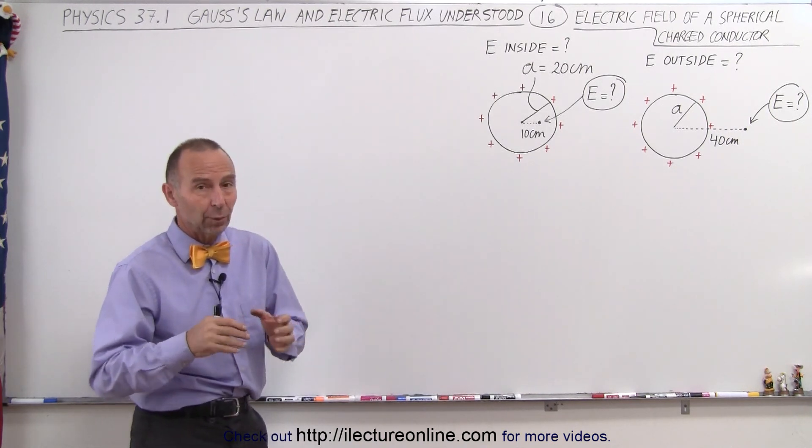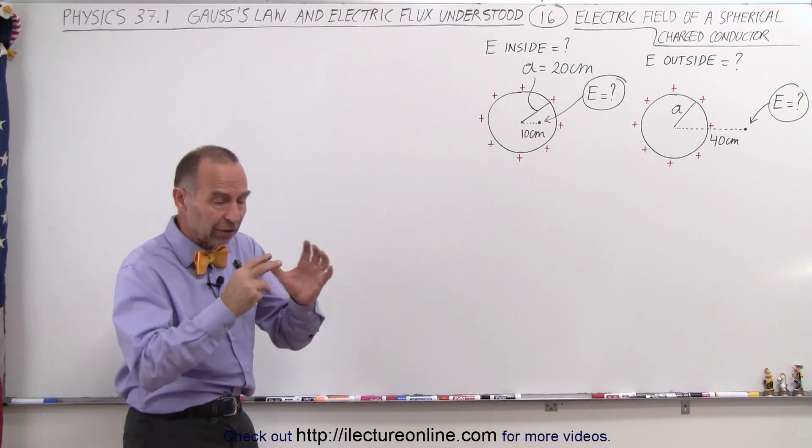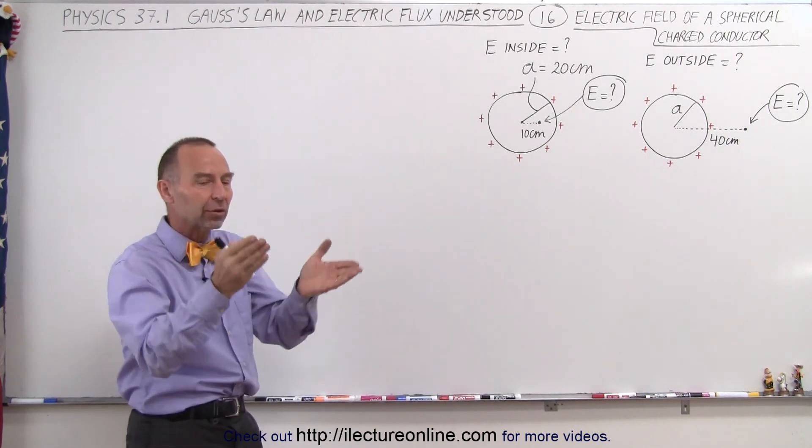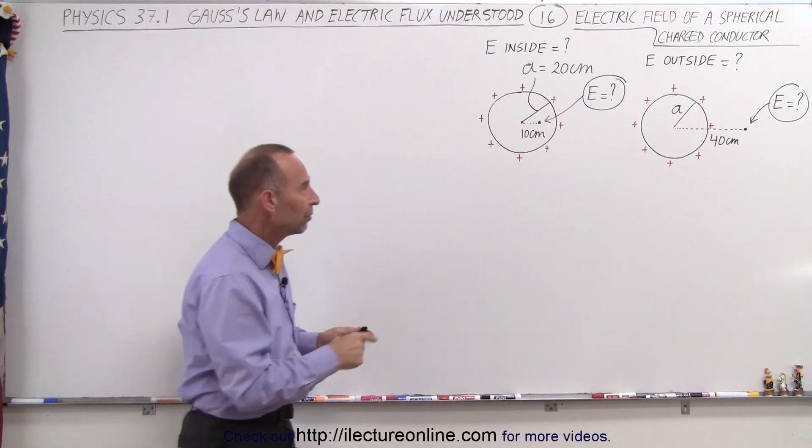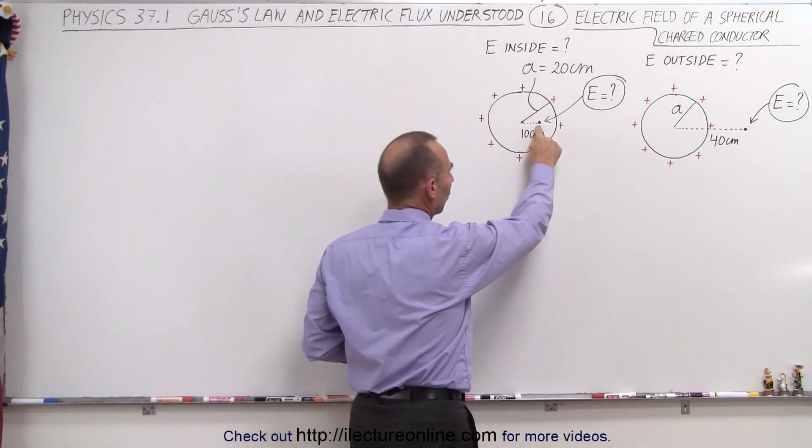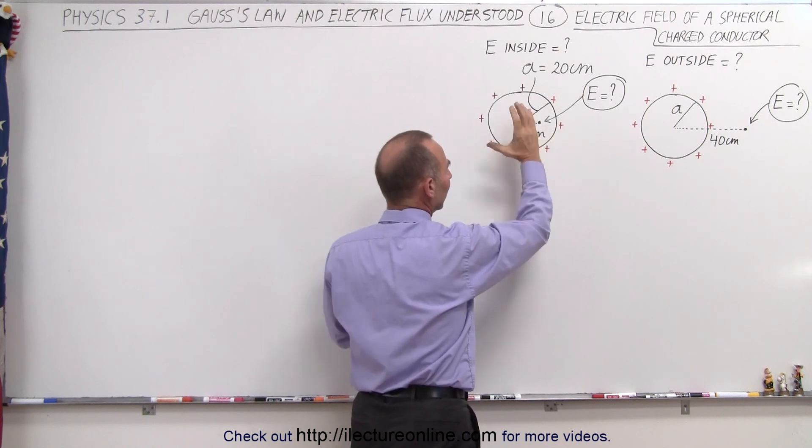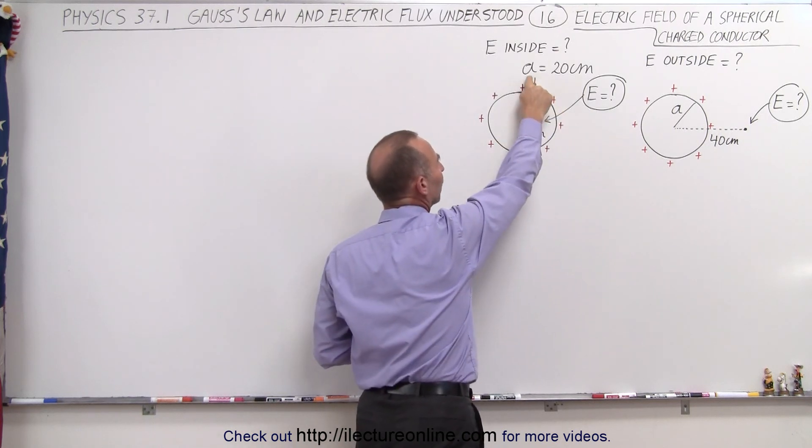We understand that when we have a conductor that's spherical and it has extra charge on it, the charge will reside on the surface. So let's first start by trying to figure out what the electric field would be at a distance of 10 centimeters from the center of that sphere.